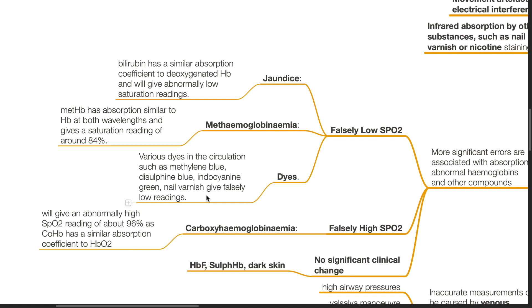In the presence of carboxyhemoglobin, this will give an abnormally high SpO2 reading of about 96% as carboxyhemoglobin has a similar absorption coefficient to oxygenated hemoglobin.